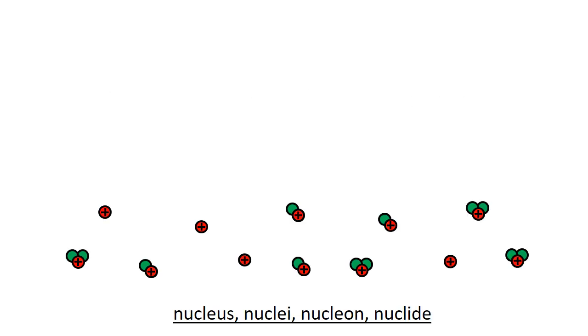So lots of terminology. We have one nucleus. The plural is nuclei. So we see here 12 different nuclei. Then inside one nucleus, there may be more than one nucleon. These are protons and neutrons inside a nucleus. And a nuclide is a specific type of nucleus.